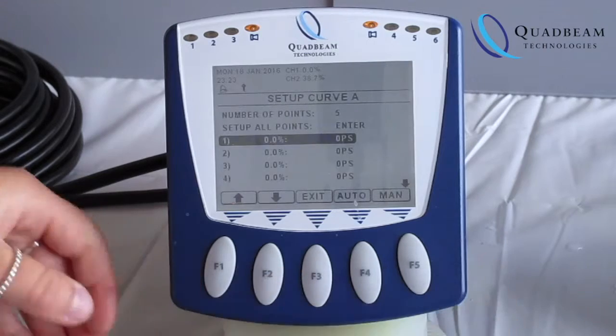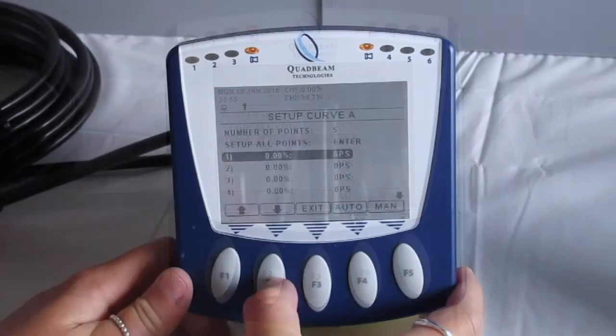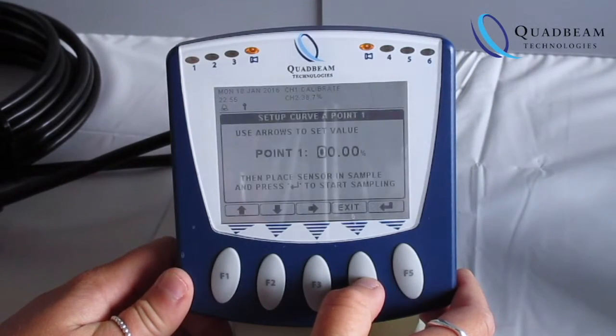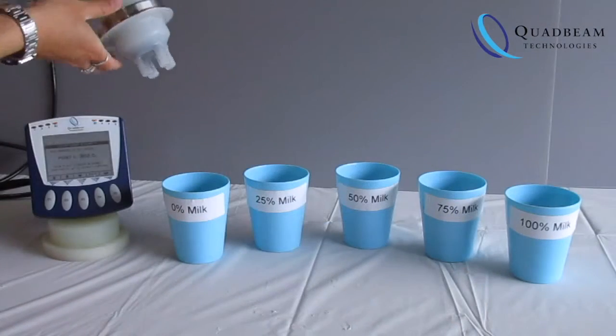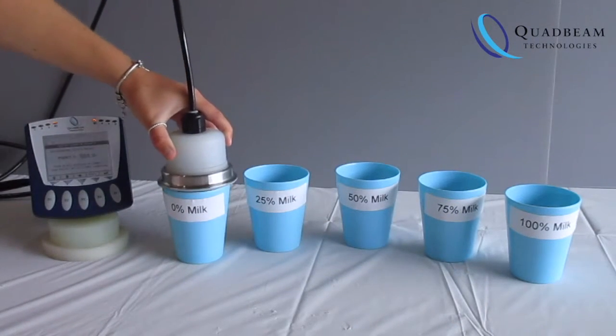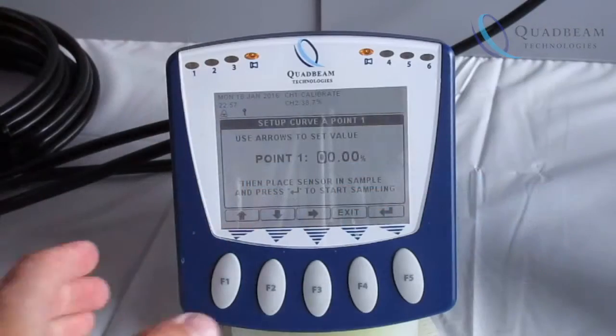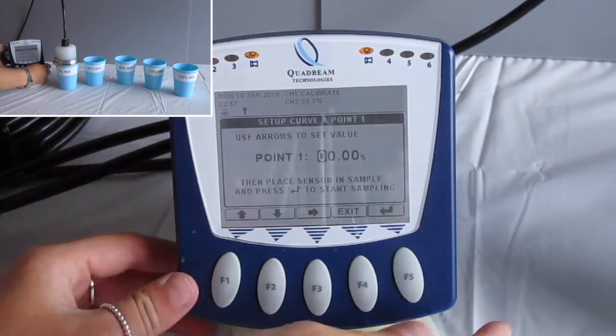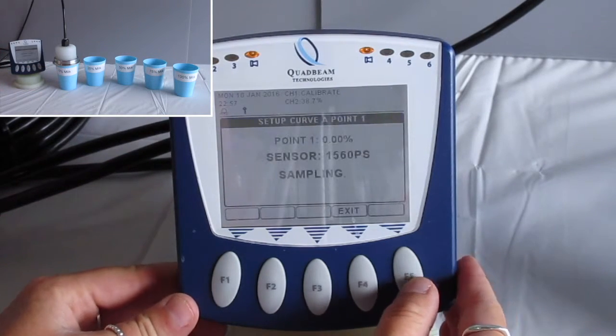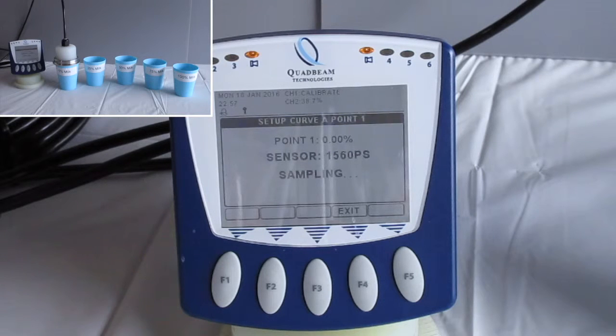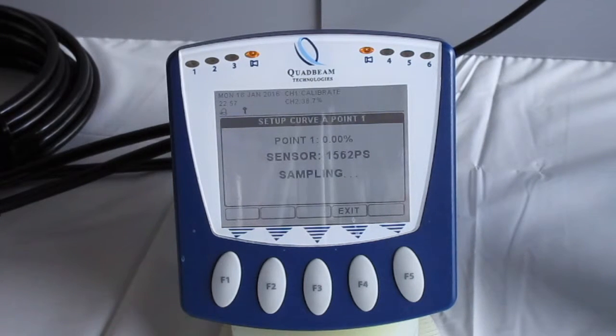Then move to the first point. Input the percentage value, being 0% in this case, just straight water. Place the sensor ensuring that it's as centered as possible to get the reflectivity as equal as possible, then push enter. You'll see that the probe signal value is being detected and sampled, and then once that is complete it will apply a probe signal value to the actual percentage.